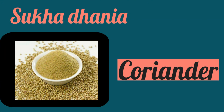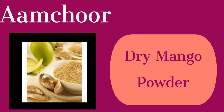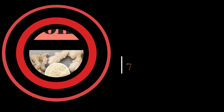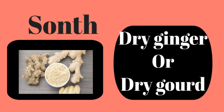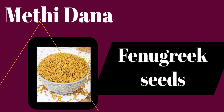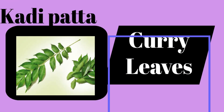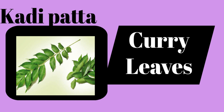Here on screen is sukha dhaniya and we call it coriander. Next is aam chur and in English we call it dry mango powder. Next is sount and it is known as dry ginger. Next is methi dana and we call it fenugreek seeds. Next is curry patta and we call it in English curry leaves.